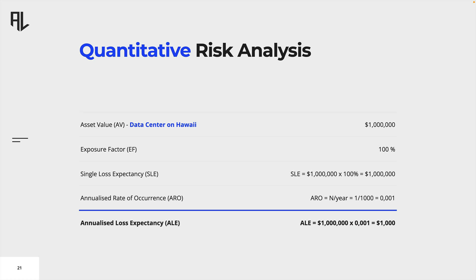Let's analyze our volcano risk with this methodology. For simplicity, we'll assume the value of the data center is $1 million. If the data center is hit by a volcanic eruption, there will probably be nothing left of it, so we set the exposure factor to 100%. The single loss expectancy — the product of asset value and exposure factor — is $1 million. The probability, expressed as the annual rate of occurrence, is set to one occurrence in a thousand years. Finally, the annualized loss expectancy equals $1,000, calculated by multiplying the SLE with the ARO.